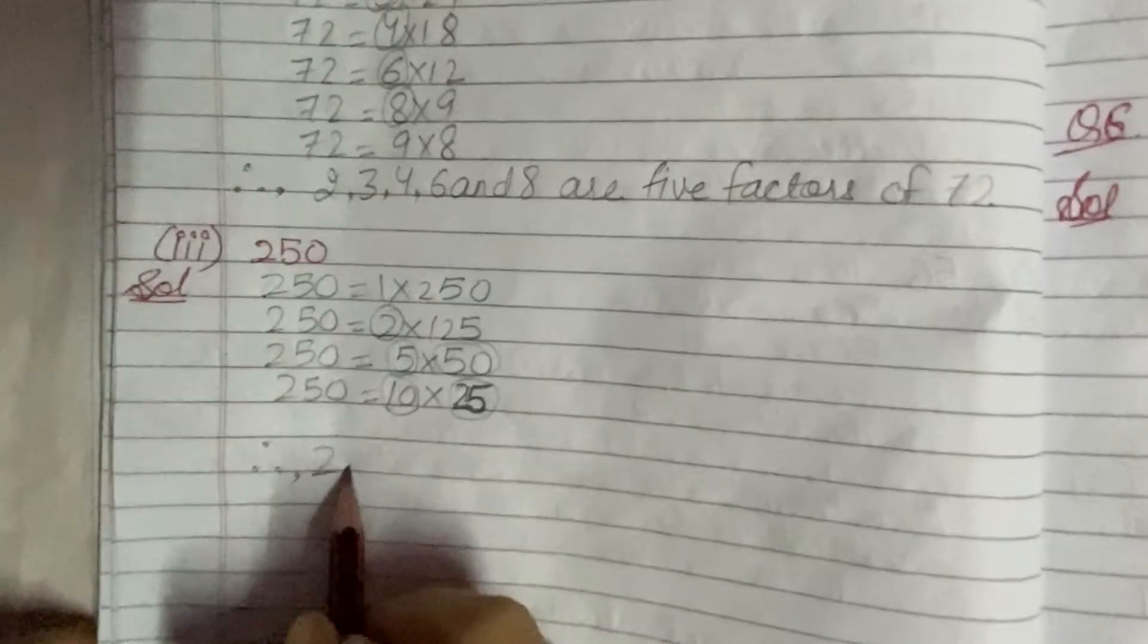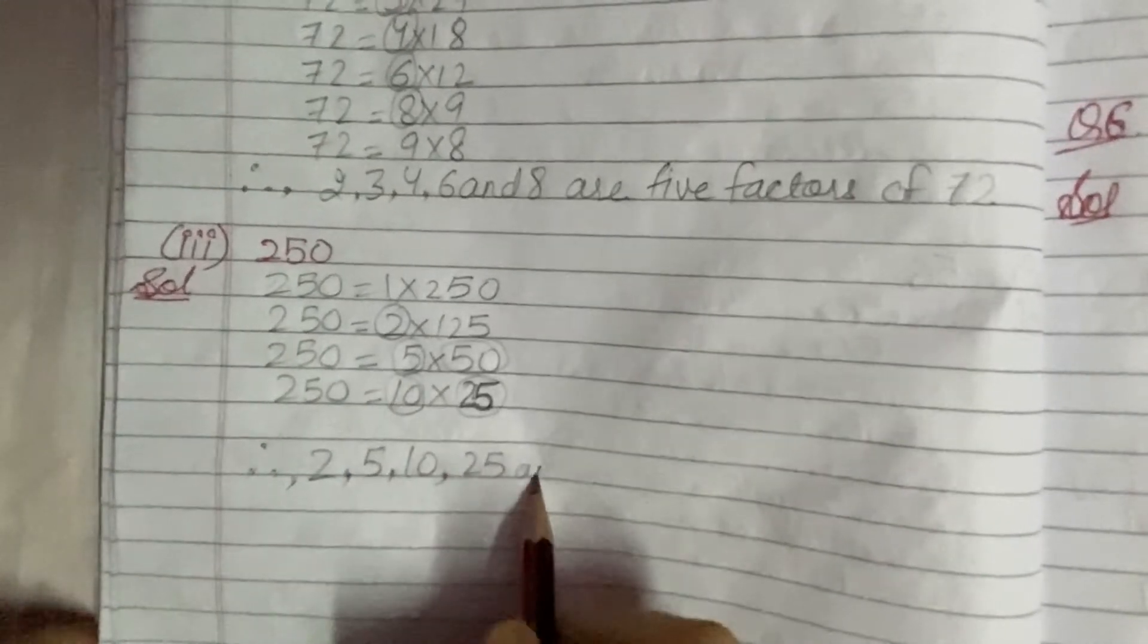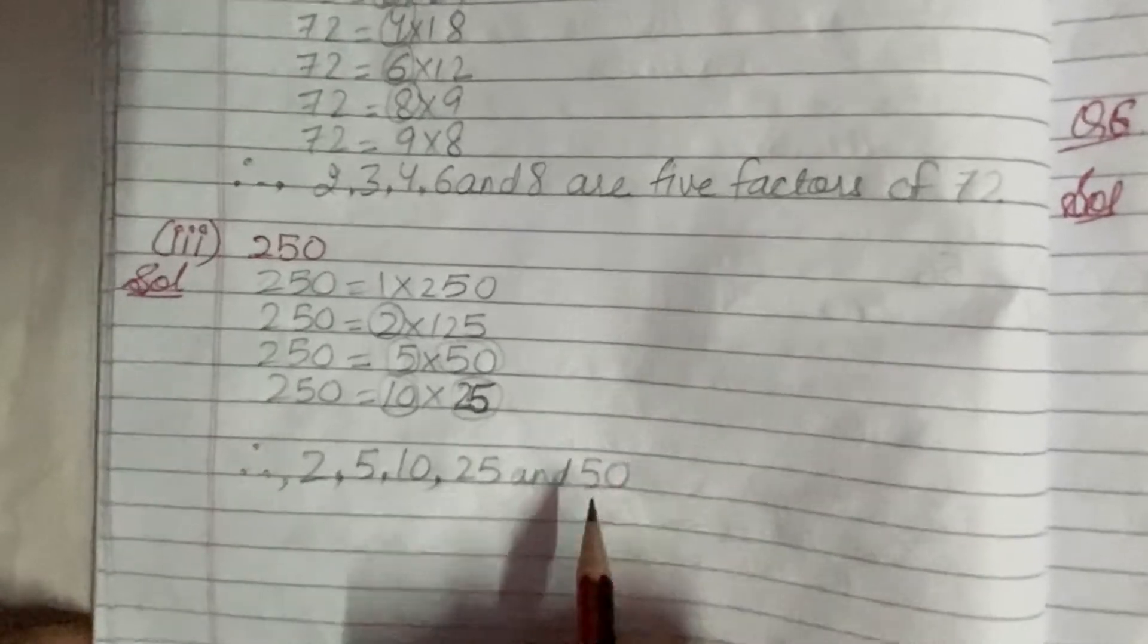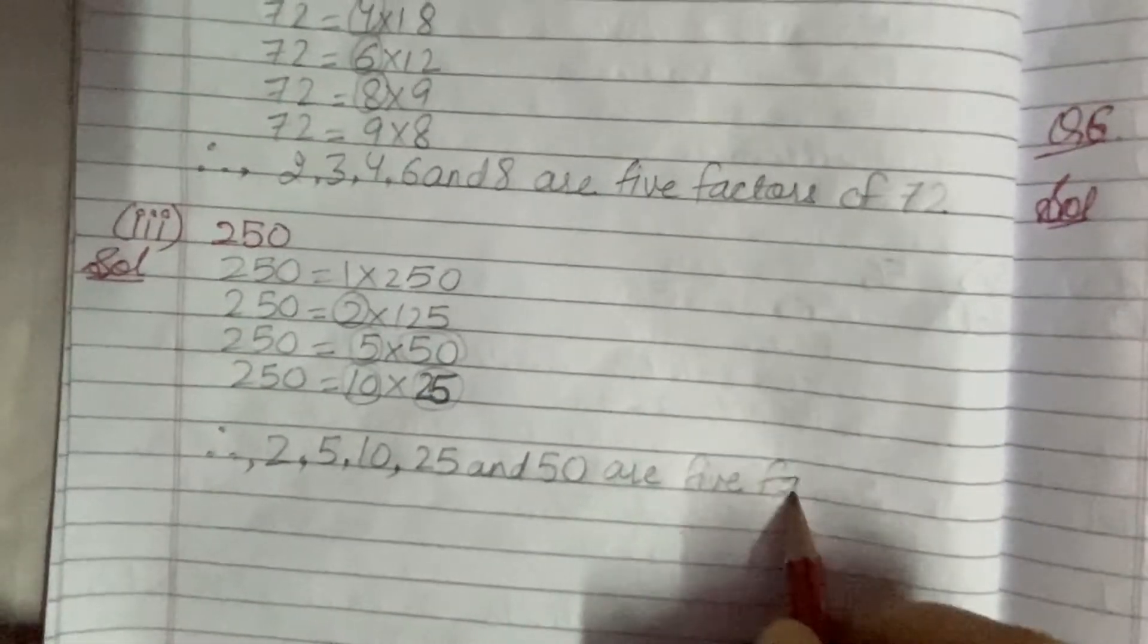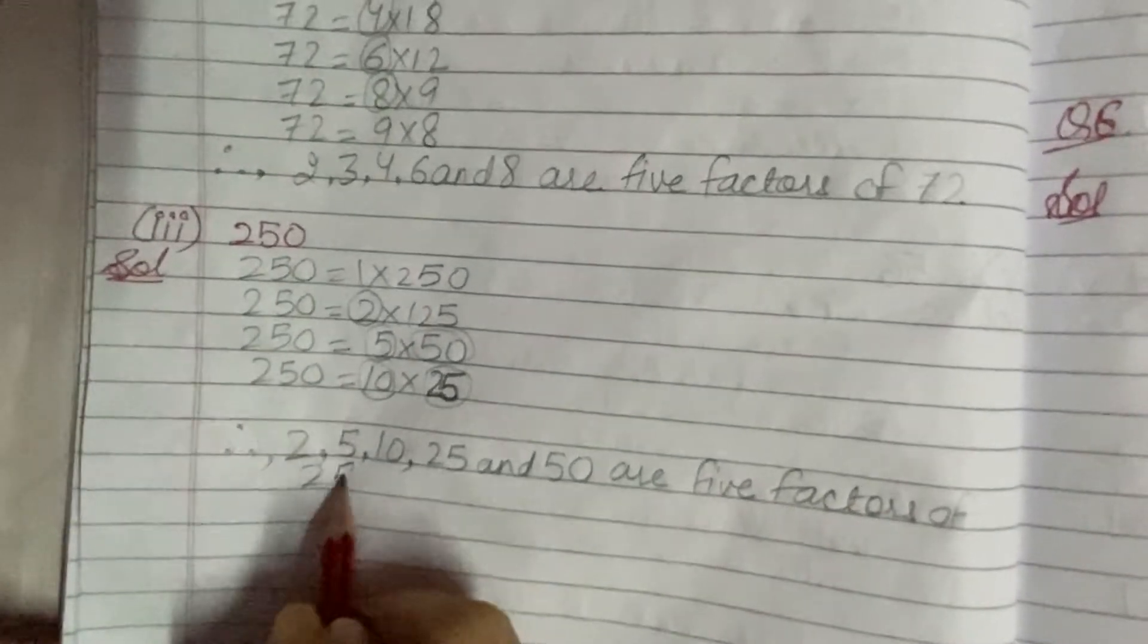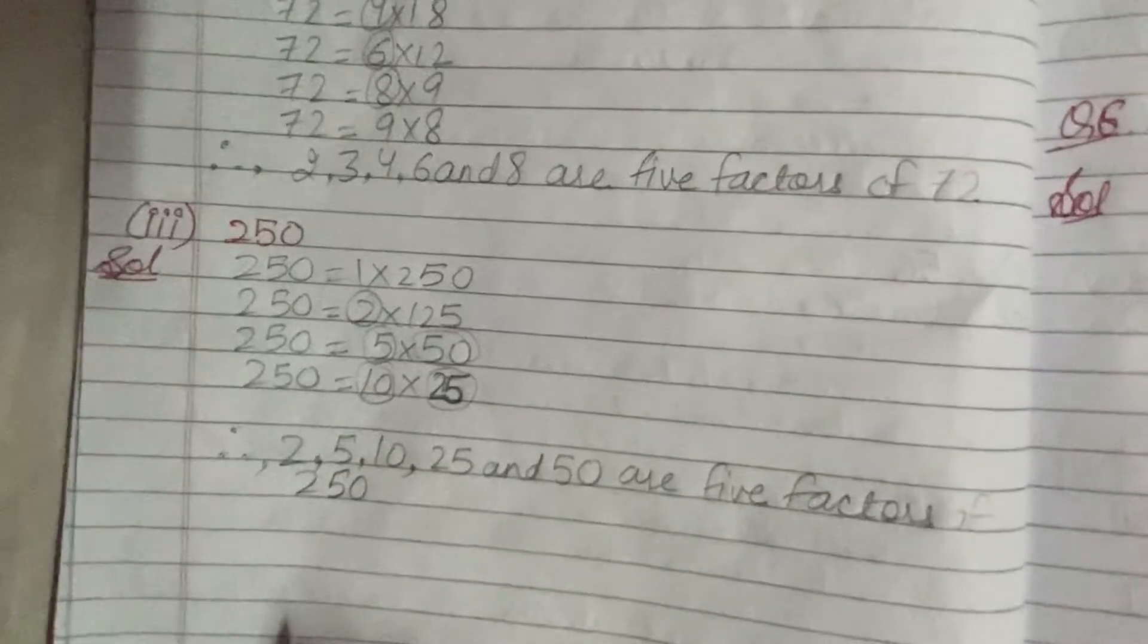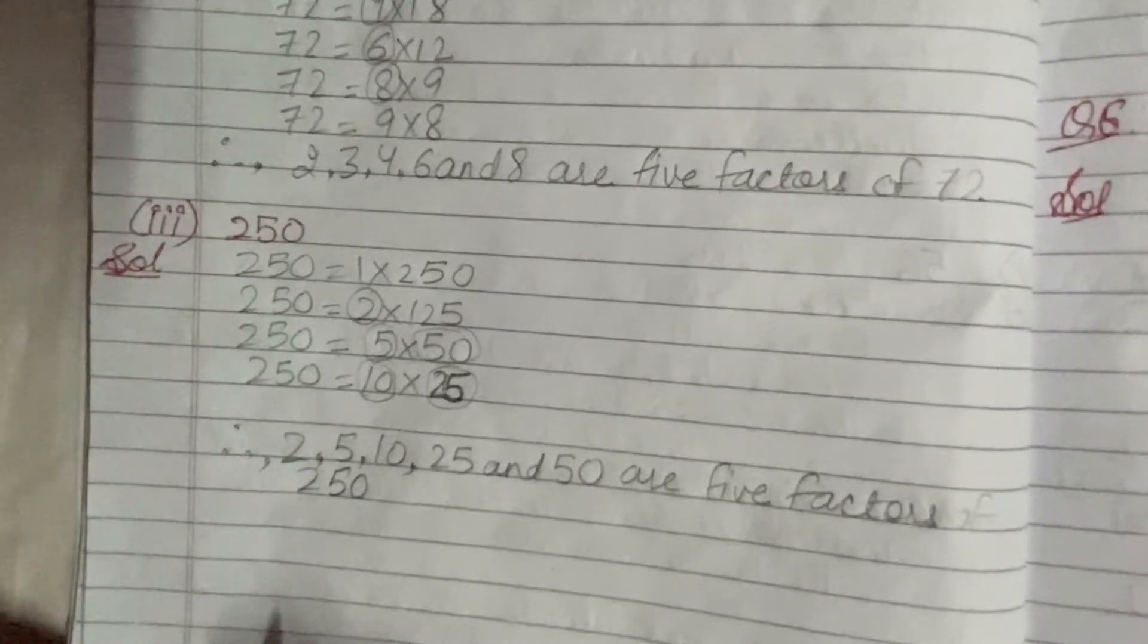So I have taken 2, 5, 10, 25, and 50 as the 5 factors of 250. So hopefully, the third part is also clear to you.